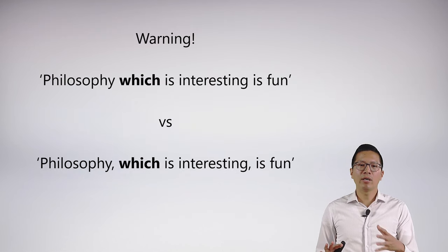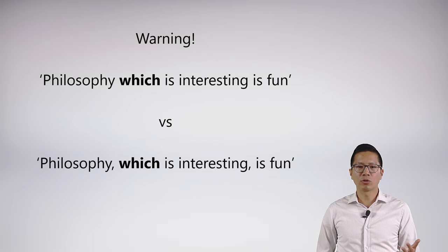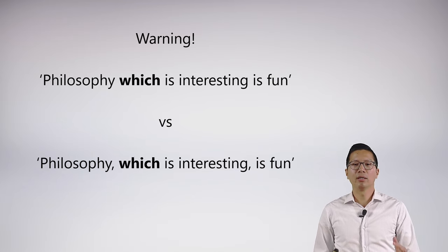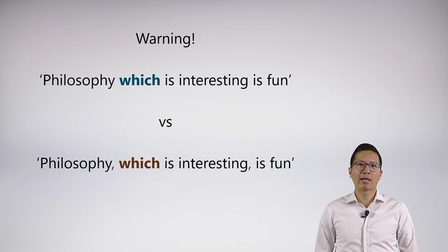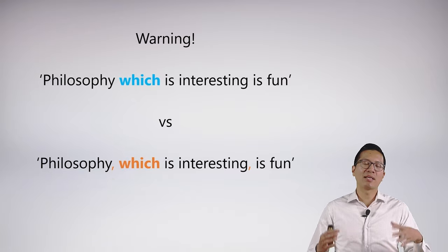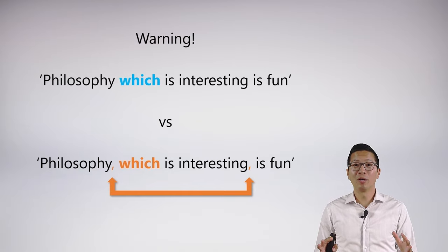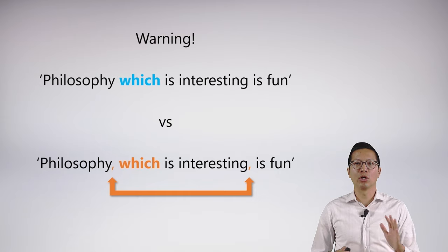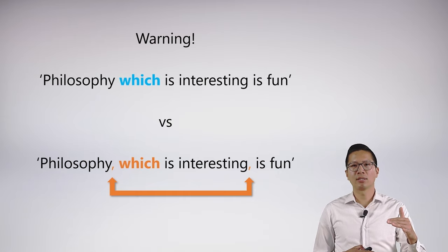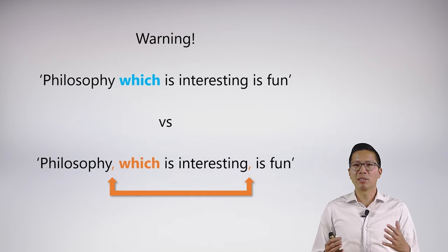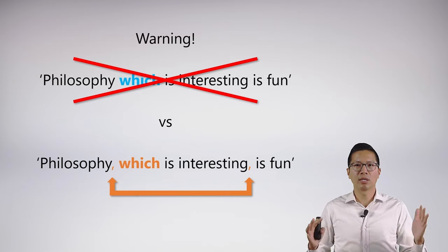There is a warning I want to put out there. I could say 'philosophy which is interesting is fun' versus 'philosophy, which is interesting, is fun.' You might think the top one has to be restrictive and the bottom one non-restrictive. And you might be right — the commas are important. However, if you actually type this into a program like Microsoft Word, it'll give you the squiggly underline on the first sentence and say that's grammatically incorrect. And I'm going to agree with that. There's something wrong with the phrasing of the first sentence without the commas — that is misleading. So for my purposes, we're not going to worry about those non-grammatically correct sentences.